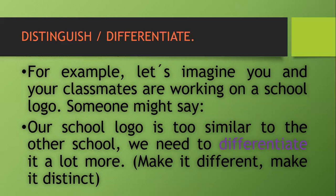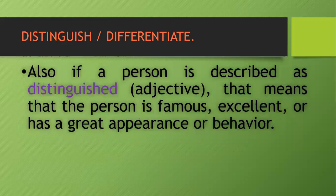And here, my friends, also be aware differentiate. Also, if a person is described as distinguished, that is an adjective. That means that the person is famous, excellent, or has a great appearance or behavior. For example, he is a distinguished person, or she is a distinguished person. It means that he is famous, or he or she is good at something, okay? For example, an artist, or a scientist, a teacher, or a doctor.